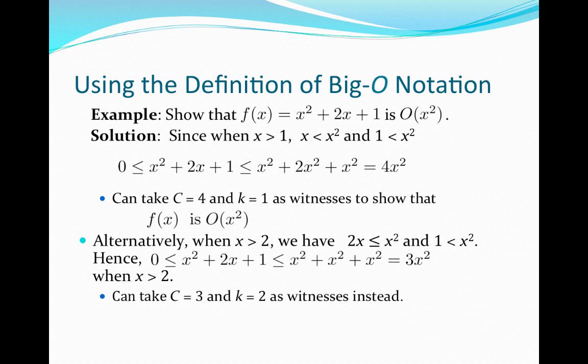Now that we've looked at the definition of big O notation, let's see how we can actually apply this definition to show that one function is big O of another function. In particular, we're going to look at the following example: let's show that f of x equal to x squared plus 2x plus 1 is big O of x squared.